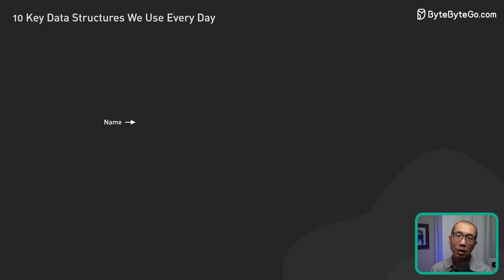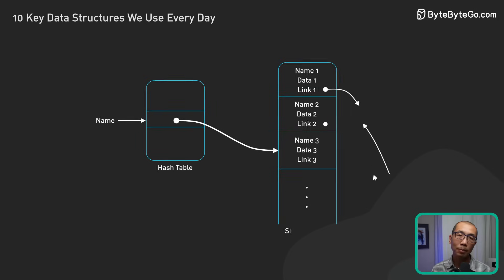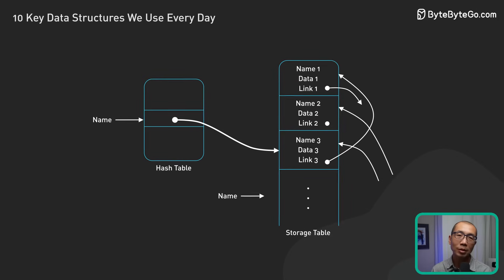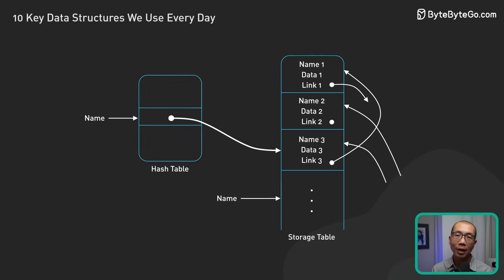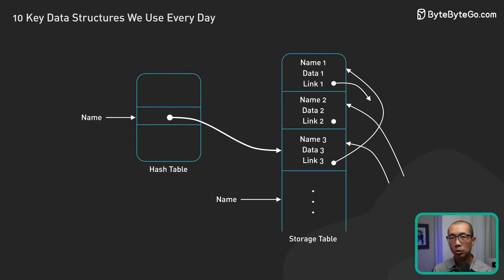Another example is the implementation of symbol tables in programming language interpreters or compilers. Hash tables can be used to efficiently manage and look up variables, functions, and other symbols defined in the source code.